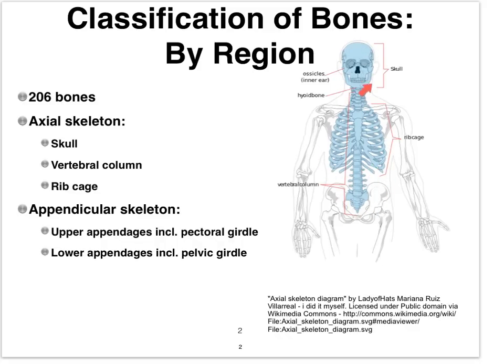The axial skeleton forms the axis of the body. Looking at which parts these are: we have the skull, the vertebral column, and the rib cage. This is a question I've asked students in the past — what belongs to the axial skeleton — and it's often missed. The scapulae, clavicles, and pelvic bones do not belong to the axial skeleton; they belong to the appendicular skeleton.